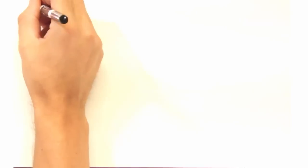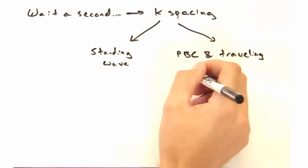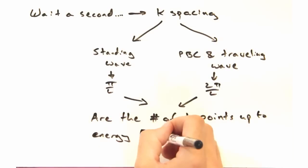This may seem a little unnerving at first. What is? The k spacing. What was it for the standing wave? Pi over l. Oh, they're different. Yeah, they are. Is that okay? Well, it should be if the number of points up to a certain energy level are the same. Exactly.